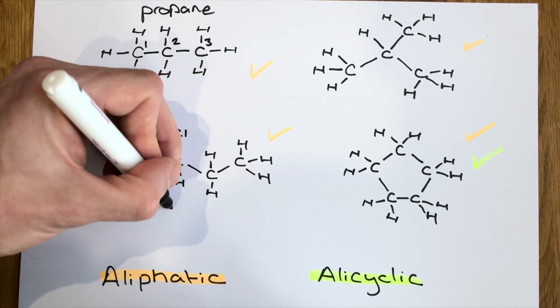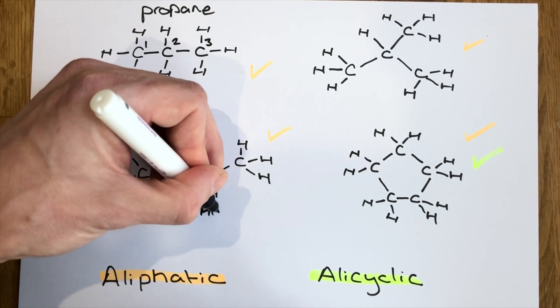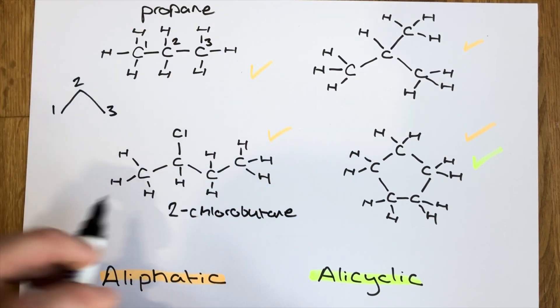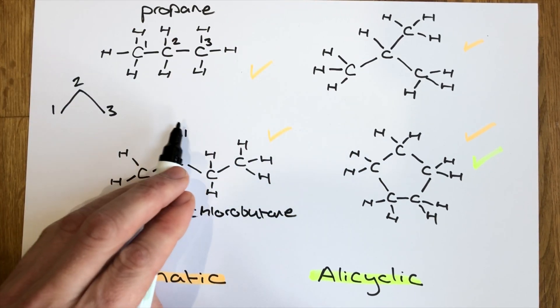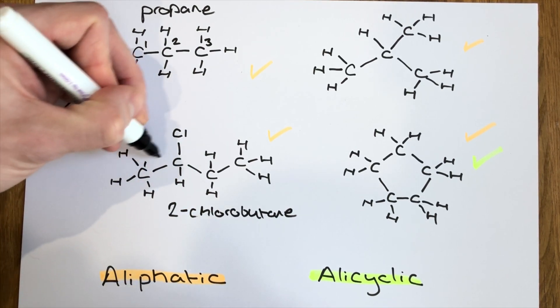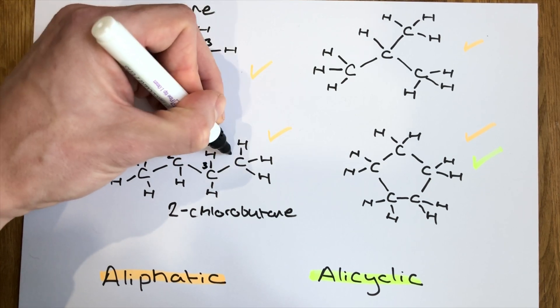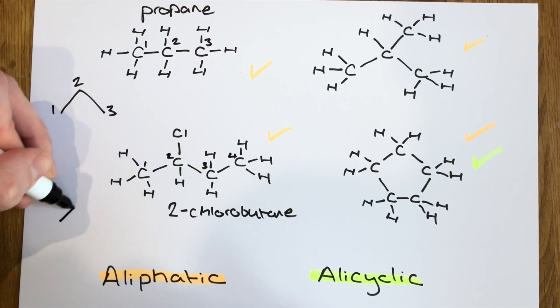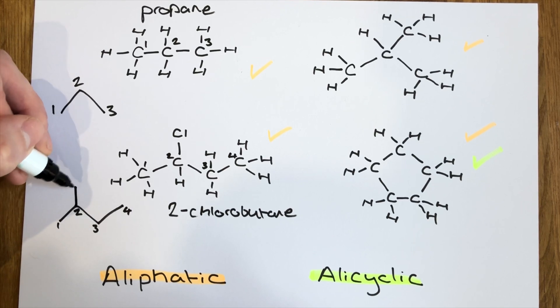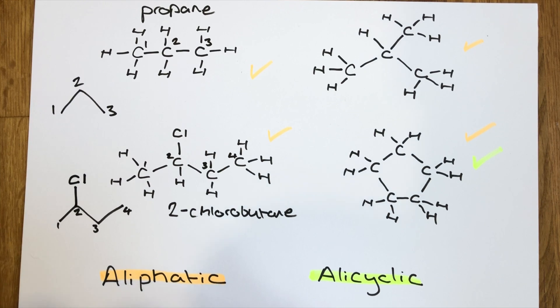The aliphatic one down here of, this would be 2-chlorobutane is a great opportunity to show you how we represent a different atom at the end of a bond. So I draw my main carbon chain of four carbons, like so. And then on the second carbon along, I need to show my Cl.